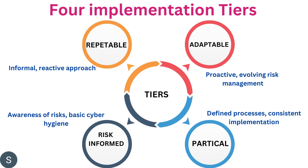Let's go through the four implementation tiers of the NIST framework. The implementation tier is based on what is relevant to your organization. The first tier is Adaptable, characterized by proactive and evolving risk management. The second is Partial, meaning defined processes with consistent implementation and risk-informed awareness with basic cyber hygiene. The third is Risk Informed, and the fourth is Repeatable, which involves an informal and reactive approach. You can adopt the tier that best fits your organizational structure.